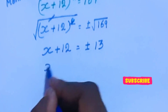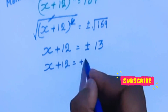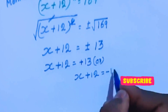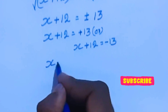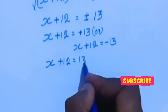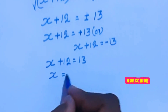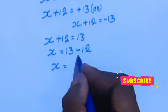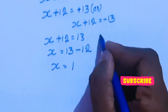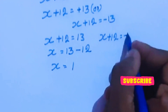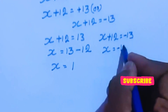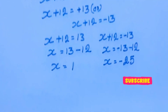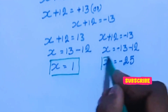Now we have x plus 12 equal to plus or minus 13, since the square root of 169 is 13. From x plus 12 equal to positive 13: x equal to 13 minus 12, so x equal to 1. From x plus 12 equal to minus 13: x equal to minus 25. These are the possible answers in the second method.